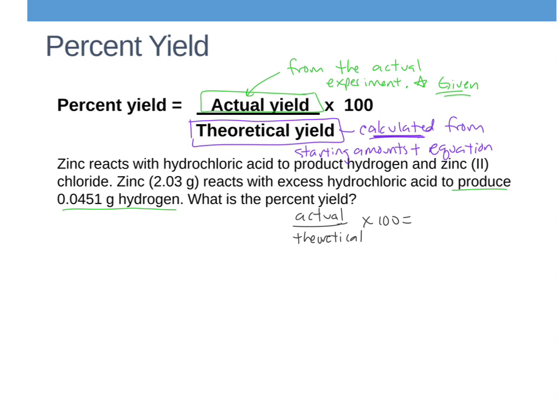What I don't know is the theoretical yield. Right now I don't know what this is, but since we're such savvy chemists, we can calculate what that is supposed to be. How much was I supposed to get? So I need to go ahead and do that. And then I go through my same steps like I always do.